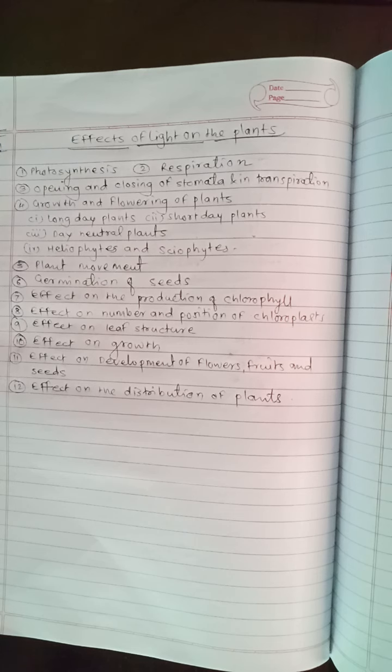Some heliophytes which are capable of growing even under shade condition are called facultative sciophytes. And those which cannot do so are called obligate heliophytes. Obligate heliophytes means the plant which does not grow in shade. Sciophytes which can grow in sunlight are called facultative heliophytes. And those which cannot do so are called obligate sciophytes. Means the sciophytes which does not grow in sunlight, they are called obligate sciophytes.